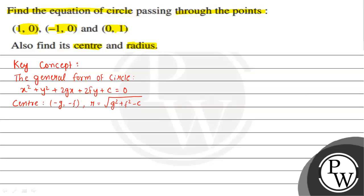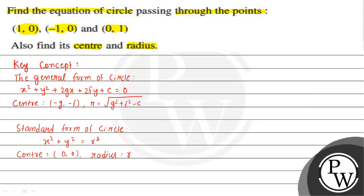The standard form of a circle is given by x² + y² = r², where the center is at the origin (0,0) and the radius is r. We will use this concept to solve this question.